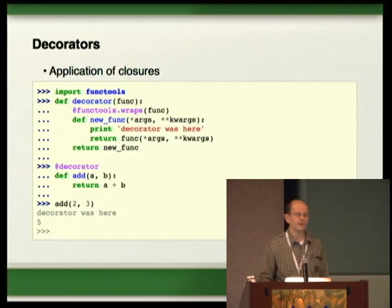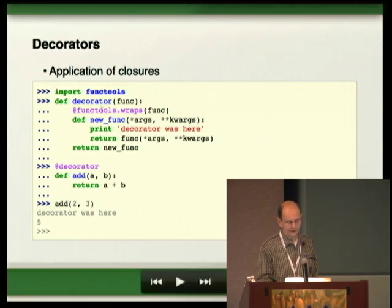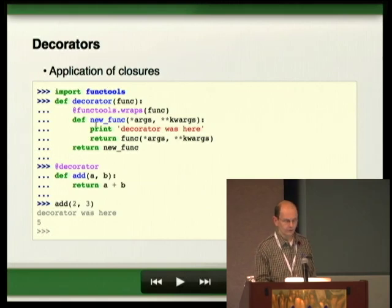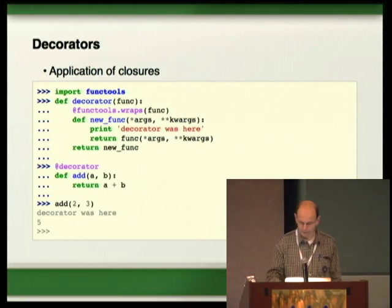Decorators are an application of the closure concept — a little bit advanced but they take advantage of it. A decorator is just a function that takes a function and returns a new function. In between, you do something additional. You should use functools.wraps to get everything right. That's what decorators do, and this has some functional-style programming already built in.